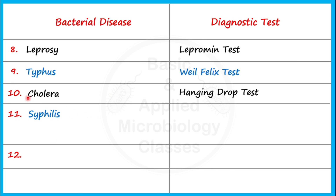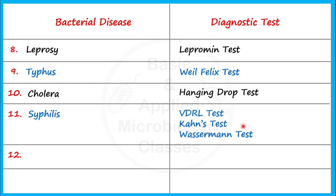Syphilis is a kind of sexually transmitted disease caused by Treponema pallidum. For detection of syphilis, the VDRL test, Kahn's test, and Wassermann test are commonly performed in diagnostic laboratories.